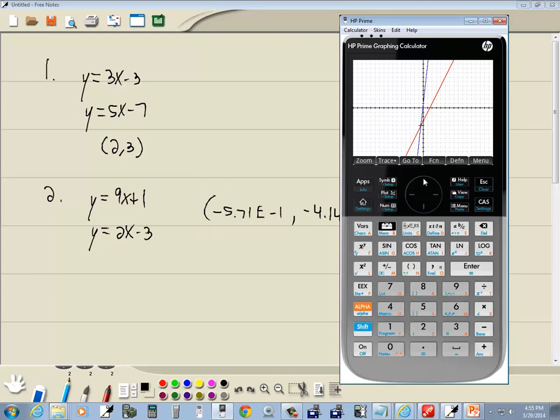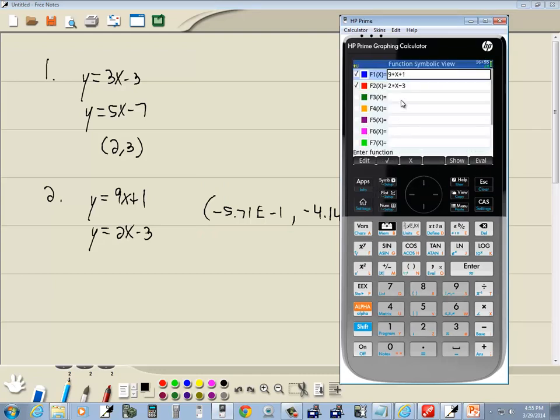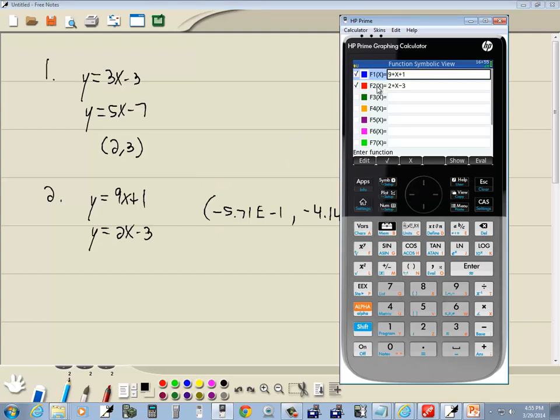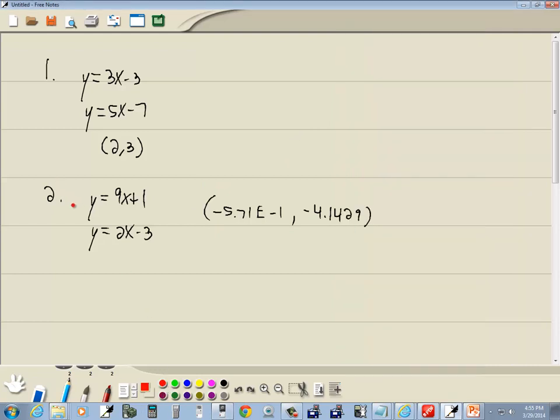I'll click OK. And I'll go back to symbol. Okay. 9x plus 1 is on F1. And 2x minus 3 is on F2. So keep those in mind. F1 and F2. Let me actually jot it down here. This is F1. And this is F2.